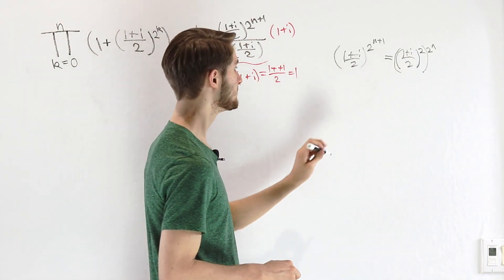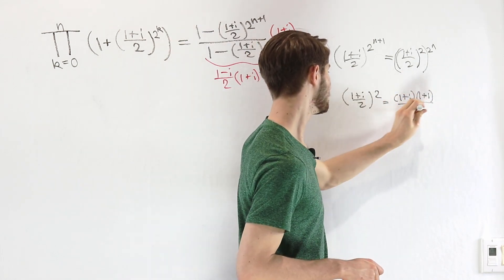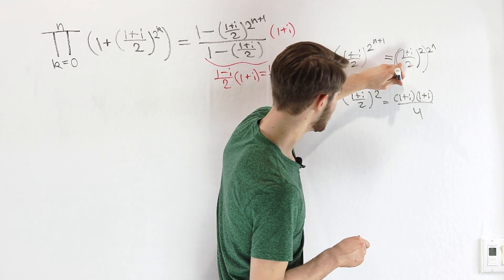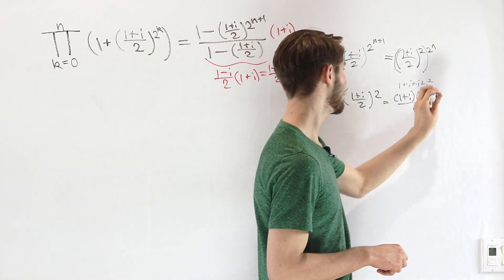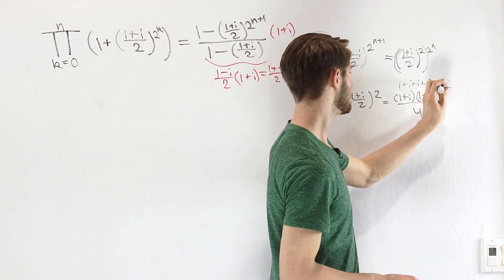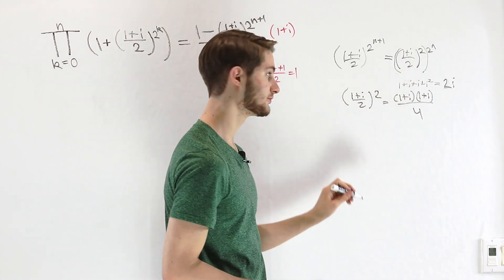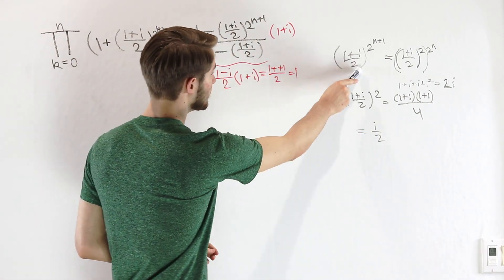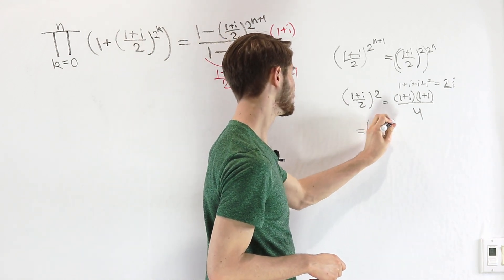If we FOIL out this numerator, we get 1 + i + i + i^2. That simplifies: 1 + i^2 is 0, so we just have 2i on top. That means this whole fraction is 2i/4, or in other words, i/2. So we can write this original expression as (i/2)^(2^n).